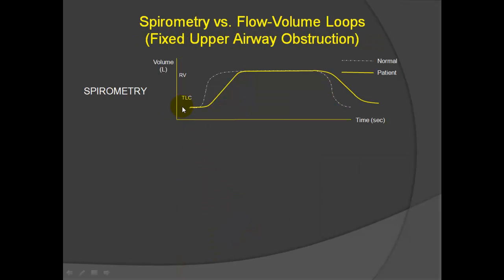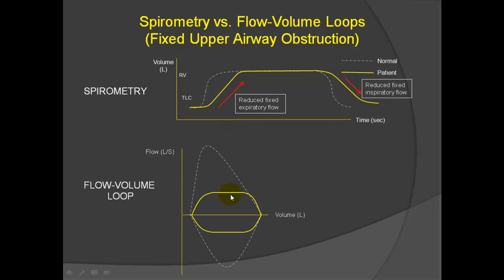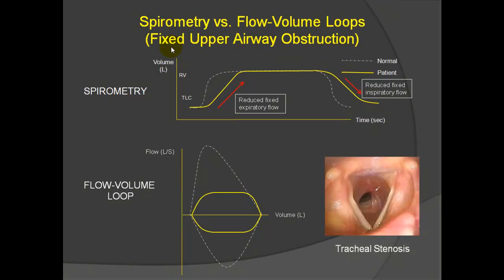Now here's an example where there's a cut off of flow in a similar fashion, both on exhalation and on inhalation. There's reduced and fixed flow in these two phases, and the flow volume curve has a squaring in both inhalation and exhalation, and this is called fixed airway obstruction. It doesn't really localize to intrathoracic or extrathoracic. It just means that there is a pinhole circumferentially in your airway somewhere. In this case, there's tracheal stenosis in the mid-trachea, so whether you're breathing in or breathing out, there is flow limitation. It's a very classic looking curve for a tracheal stenosis patient.